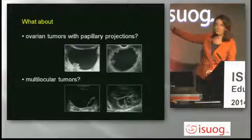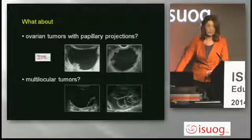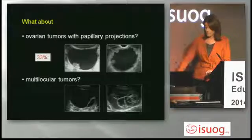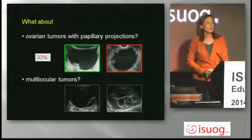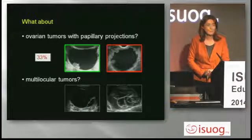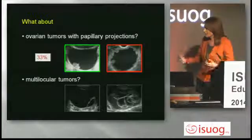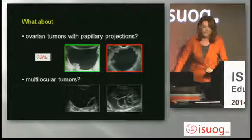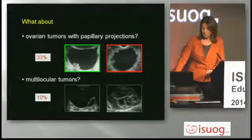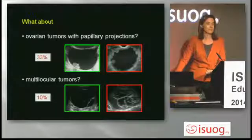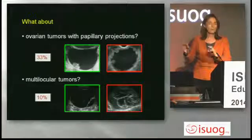In these situations we can try to apply simple rules. What is the prevalence of malignancy? Unilocular solid tumor: 33%. Multilocular tumor: 10%. Is it possible to differentiate — this is benign, this is malignant? That is our task. We know the general prevalence, but we want to differentiate. Simple rules can help in doing that.